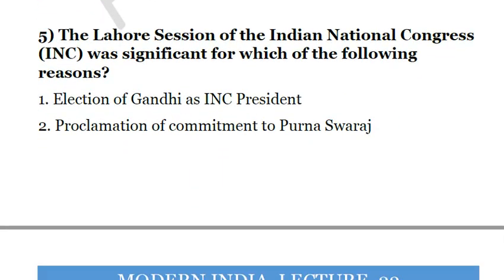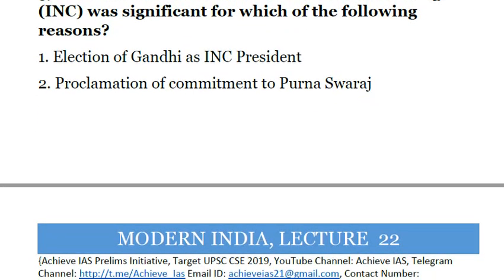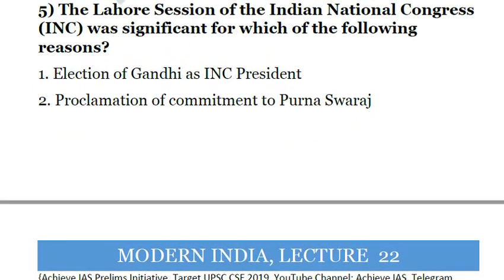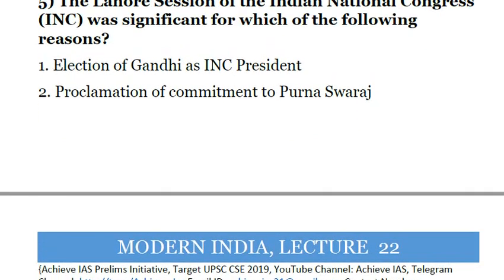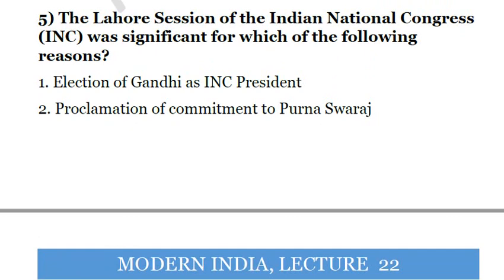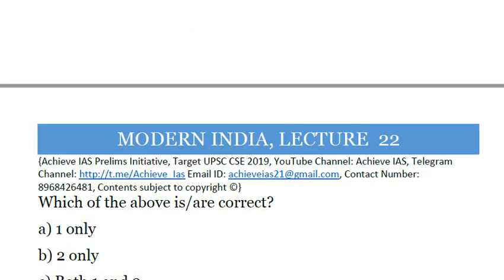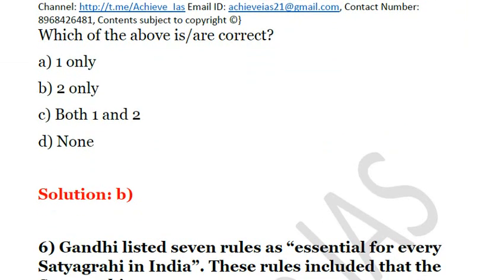Question 5: The Lahore Session of the Indian National Congress was significant for which of the following reasons? First, election of Gandhi as INC president. Second, proclamation of commitment to Purna Swaraj. The first is not correct because in the Lahore Session it was Jawaharlal Nehru who was elected president, not Gandhi. However, it was significant because Congress demanded Purna Swaraj — complete independence from British rule — for the first time. The answer is B: second only.